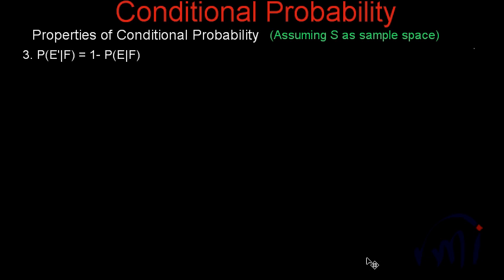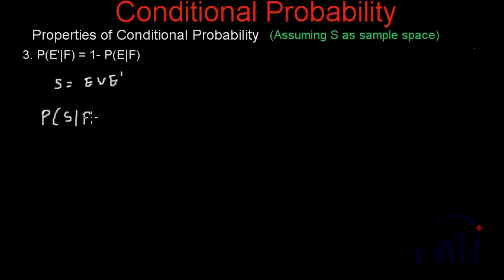So as we know, S is a sample space. S is actually equal to E union E dash. E is the set of all the favorable outcomes of event E happening, and E dash is the set of all the possible outcomes where event E is not happening. E dash is the complementary set of E. So E union E dash will make the sample space, and the probability of S given F has already happened is equal to 1. So the probability of E union E dash given F has already happened will also be equal to 1.